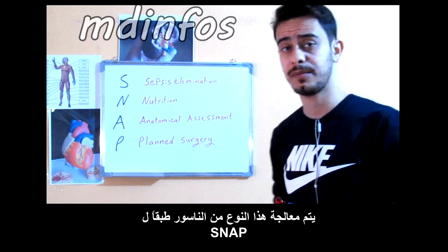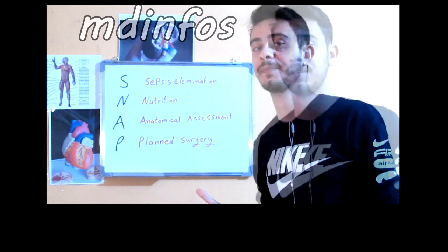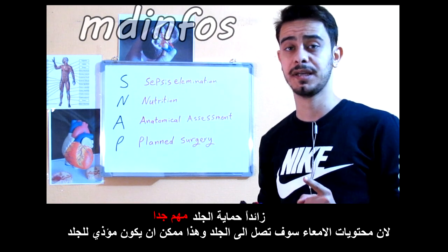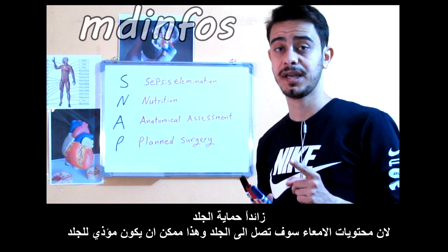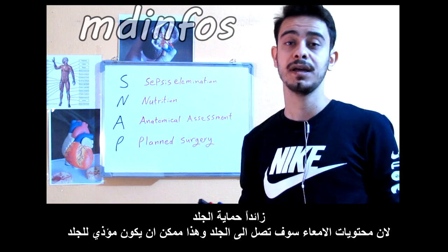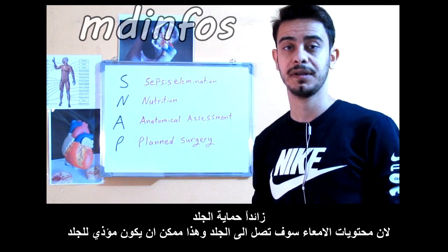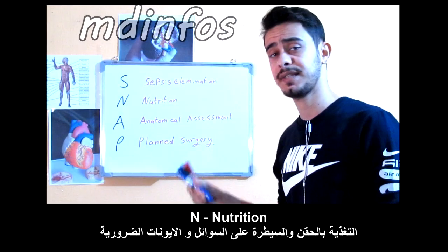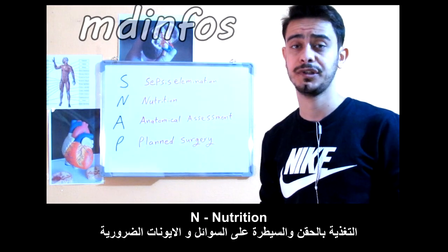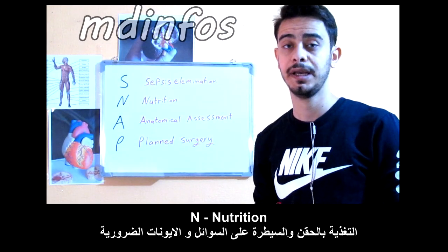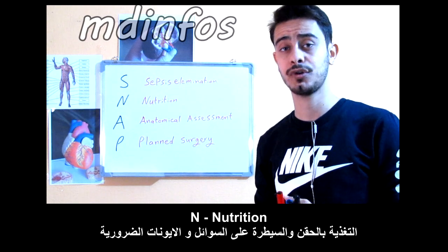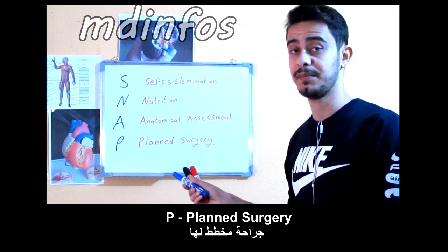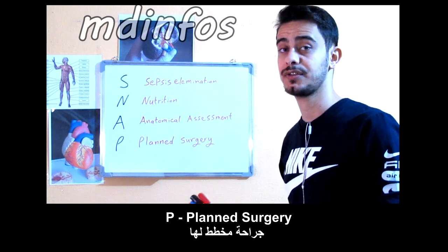Enterocutaneous Fistulas are managed according to SNAP. The S stands for sepsis elimination plus skin care, because skin care is very important as intestinal contents are going up to the skin, which can be quite irritating. The N stands for nutrition, parenteral nutrition, and also controlling fluids and electrolytes. A stands for anatomical assessment, and P stands for planned surgery.